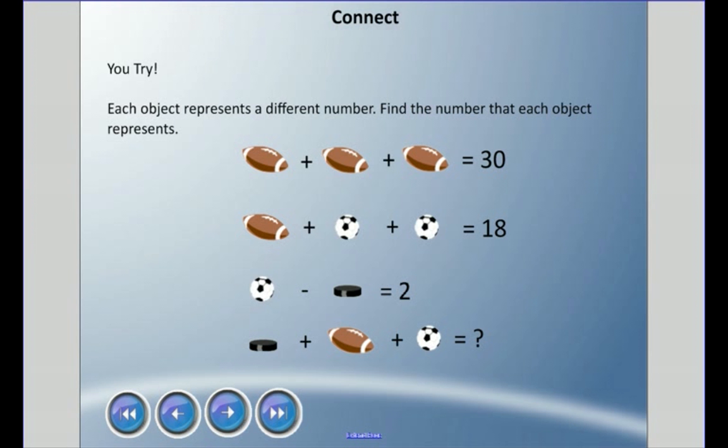Alright, so we have a football, we have a soccer ball, and we have a hockey puck. The first one maybe is the easiest one to look at. It's football + football + football = 30, has to be three of the same number. Well I gotta just right off the bat divide this by three.